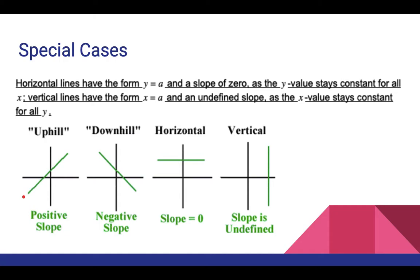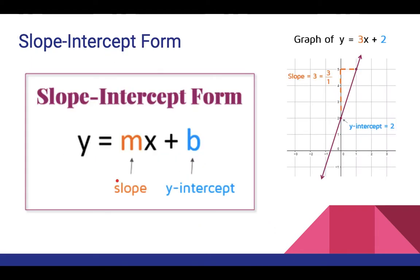For positive slopes, represented by uphill lines, as x increases, y also increases. While for negative slopes, we have a downhill line, because as x increases, y decreases on our graph. Slope-intercept form is of the form y equals mx plus b. Our standard is to write in point-slope form and then, if necessary, convert to slope-intercept form.